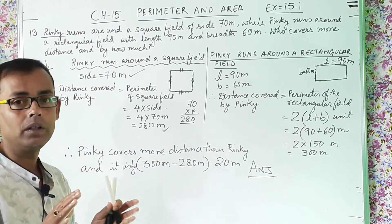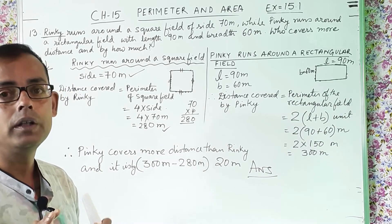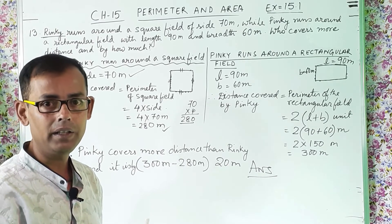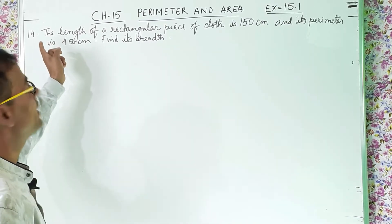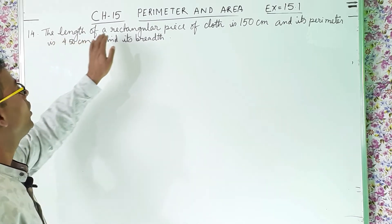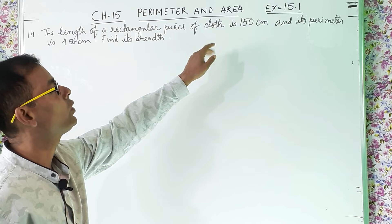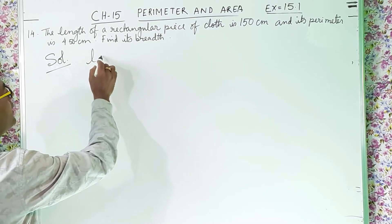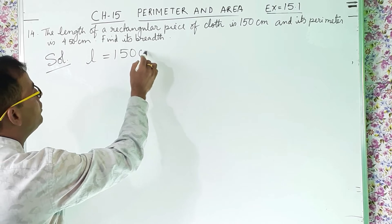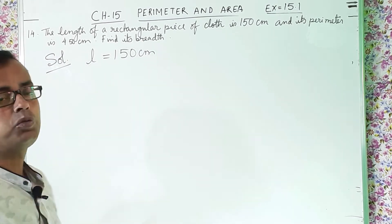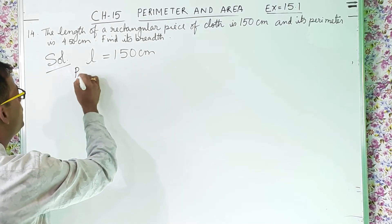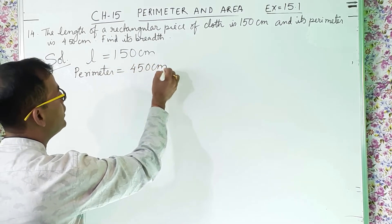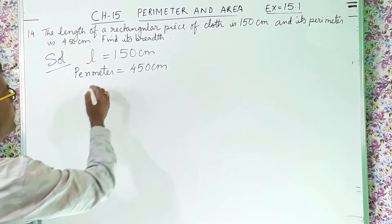I think the concept of this sum you have understood nicely, so keep on practicing. We will move on to the last sum of this exercise — question number 14. The length of a rectangular piece of cloth is 150 centimeter and its perimeter is 450 centimeter. Find its breadth. So perimeter is equal to 450 centimeter and we have to find out the breadth.